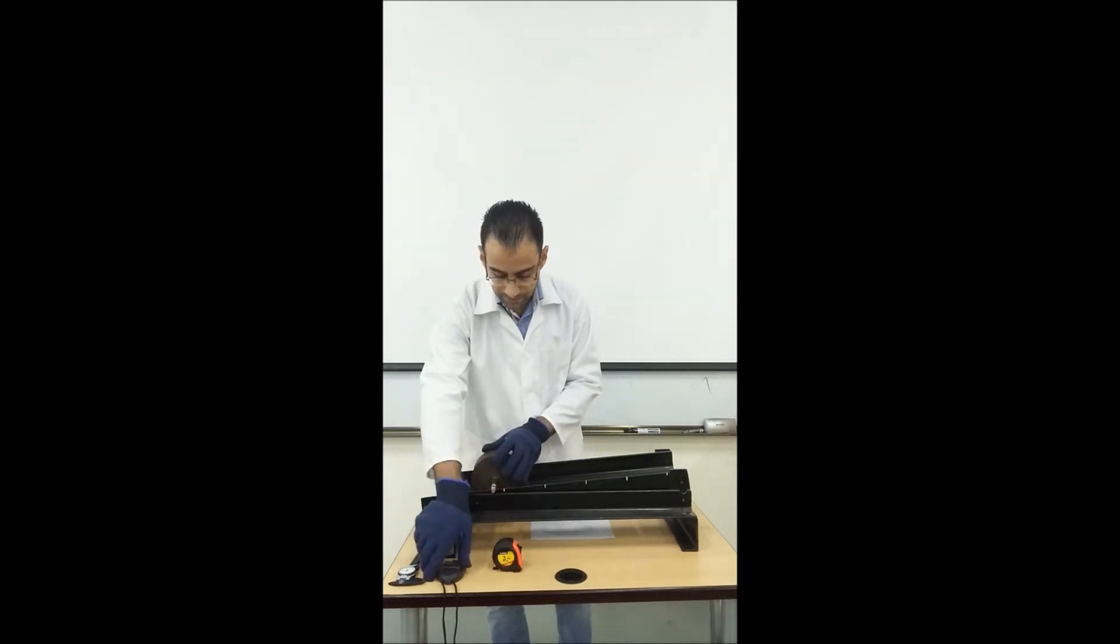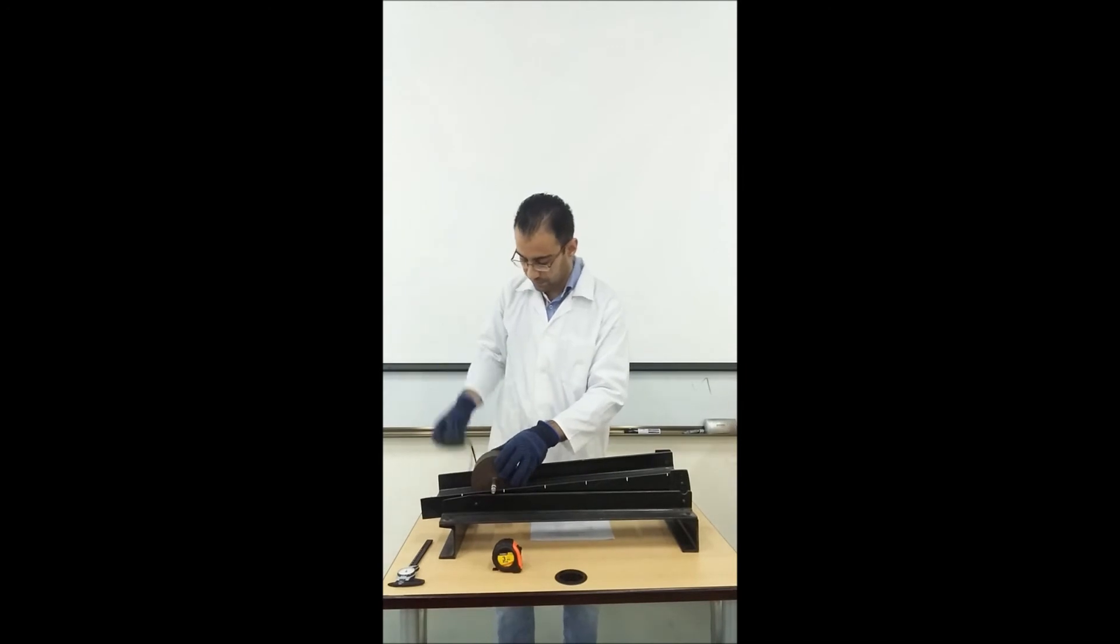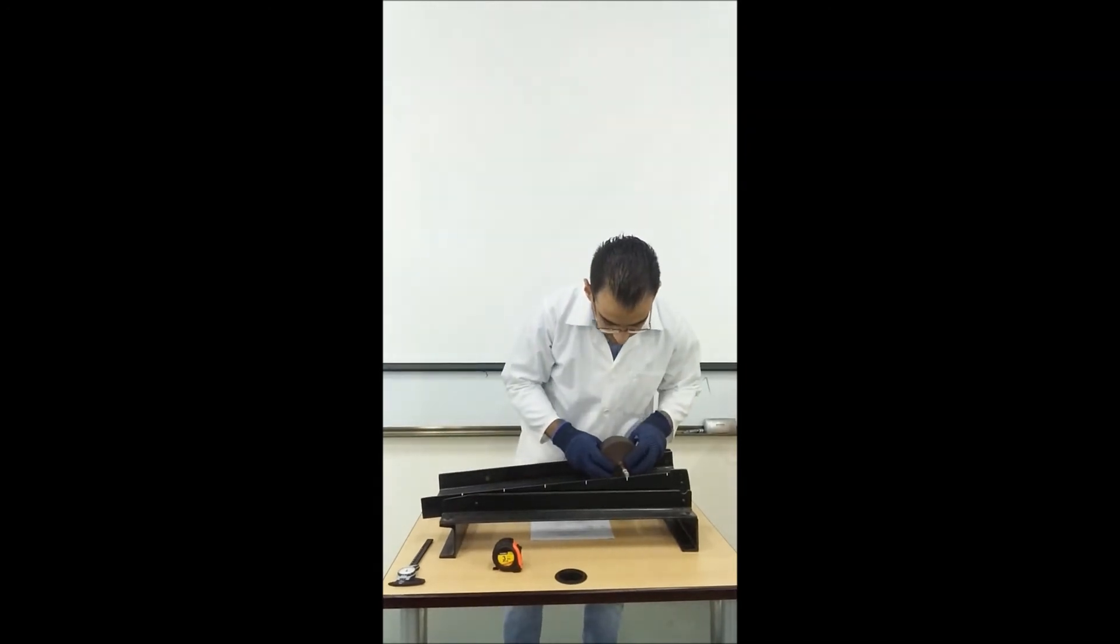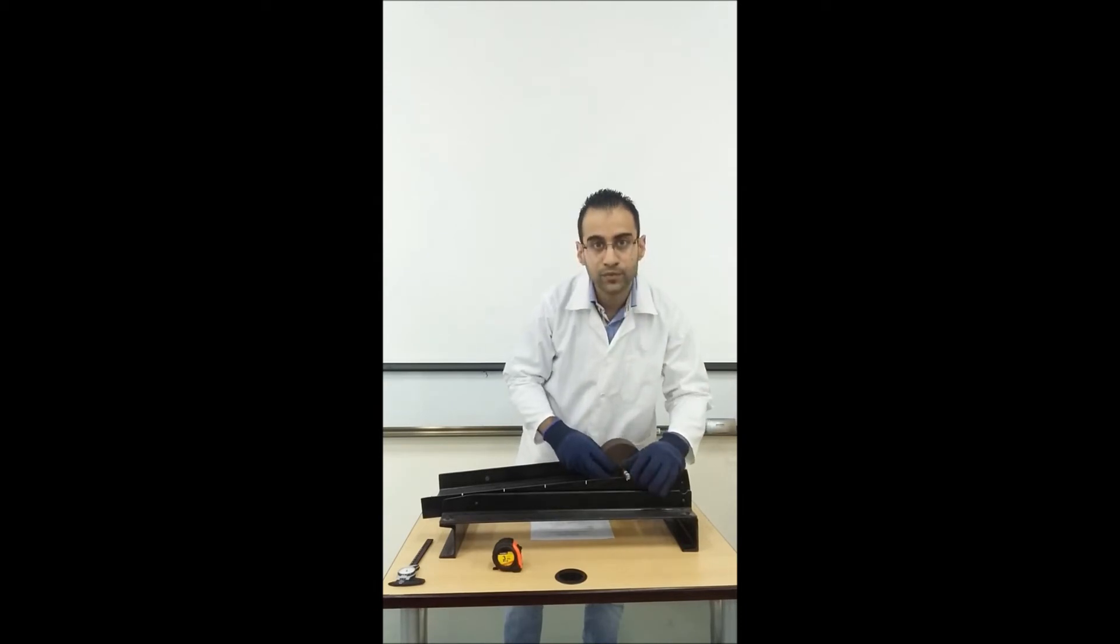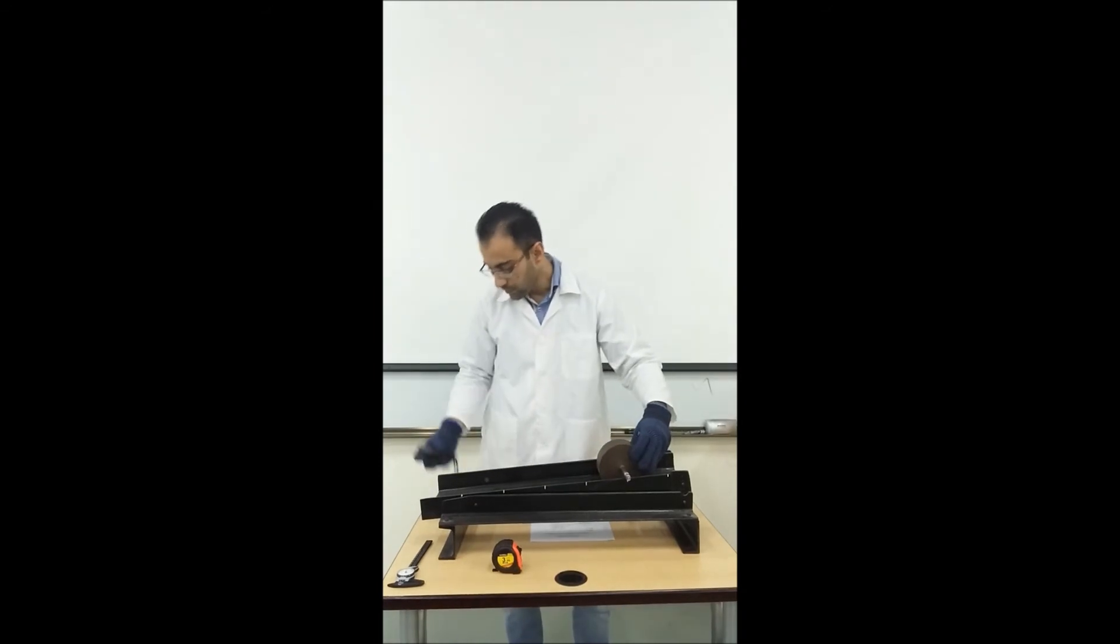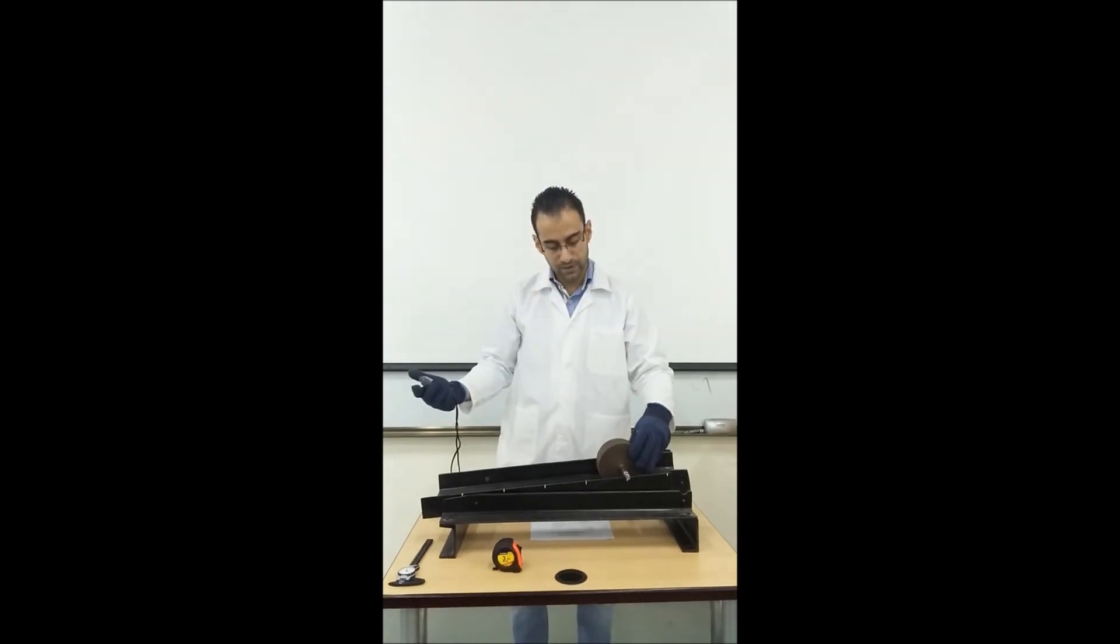So I'll show you an example here. If we would like to get the time for 10 centimeters of rolling, let's place it at this point. We are going to start logging the time as we let the wheel go. So we zero the stopwatch first, then we let the wheel go.